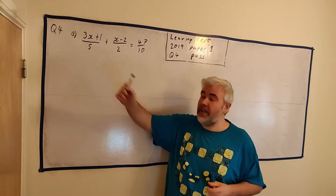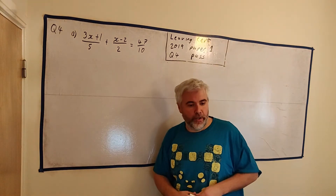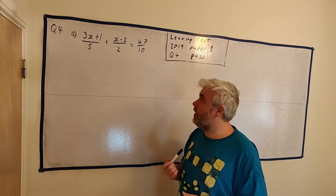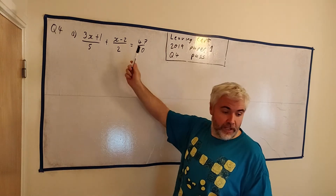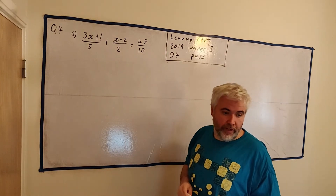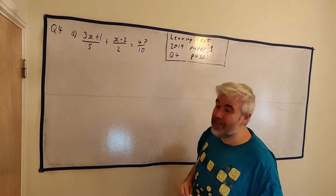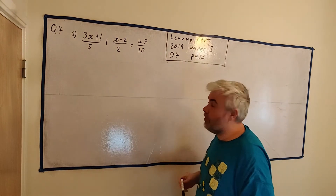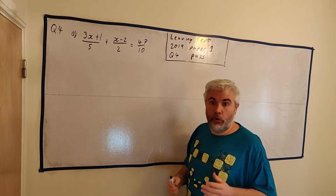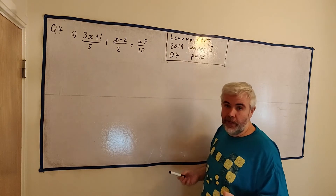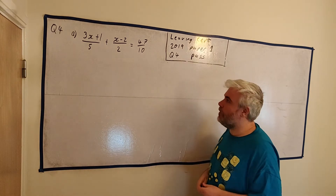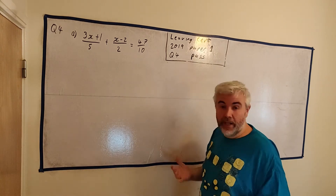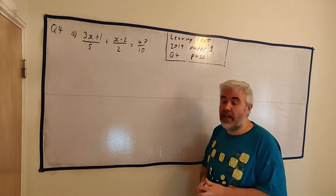I've written out part A on the board. We have 3x plus 1 divided by 5, plus x minus 2 divided by 2, equals 47 over 10. Now, students — whether Ordinary Level or Honours — all hate fractions. People hate fractions. I hate fractions. So I get rid of them.